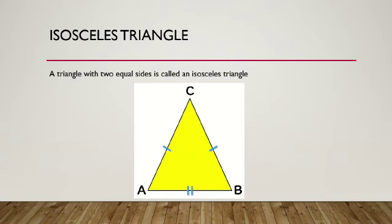Isosceles triangle — a triangle with two equal sides is called an isosceles triangle. In triangle ABC, AC is equal to BC. That's why triangle ABC is an isosceles triangle.